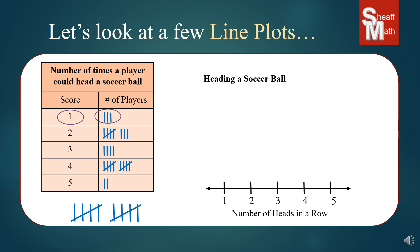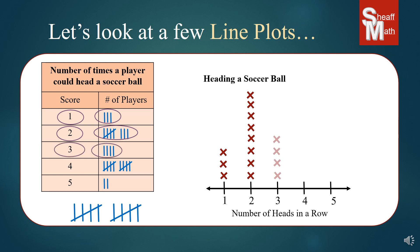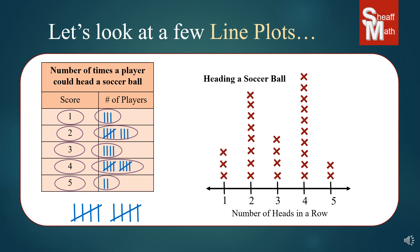So we look at the first row: how many kids headed the ball one time? There were three, so we put three X's. How many kids could do it two times? We have a five and then three, so that makes eight kids. How many did it three times? Four, so we put four X's. How many could do it four times? Five and five is ten, so we put ten X's. And how many could do it five times? Only two, so we put that above the five.